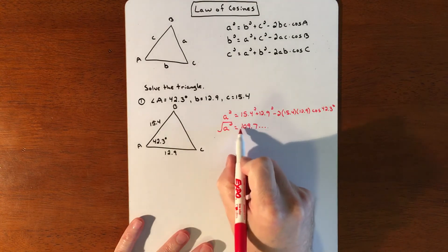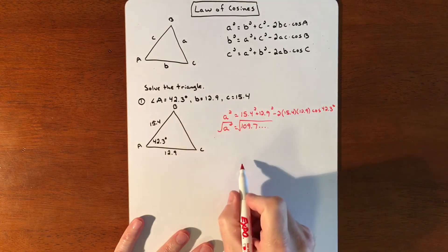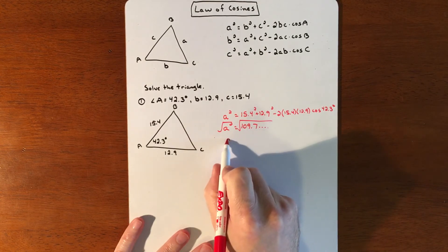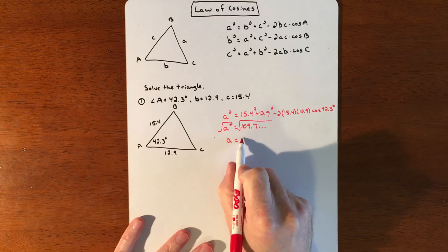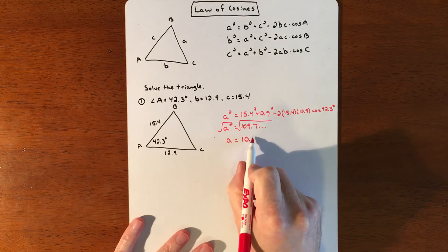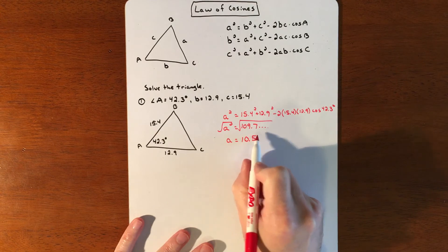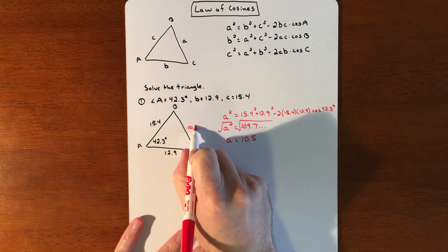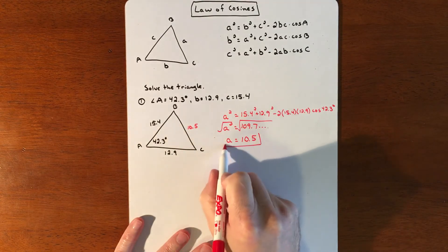And then I'm going to square root the whole bunch of stuff after that as well. I'll let my calculator store all that information and square root it. And so that gets us about 10.5. So that gets us a. A is 10.5.